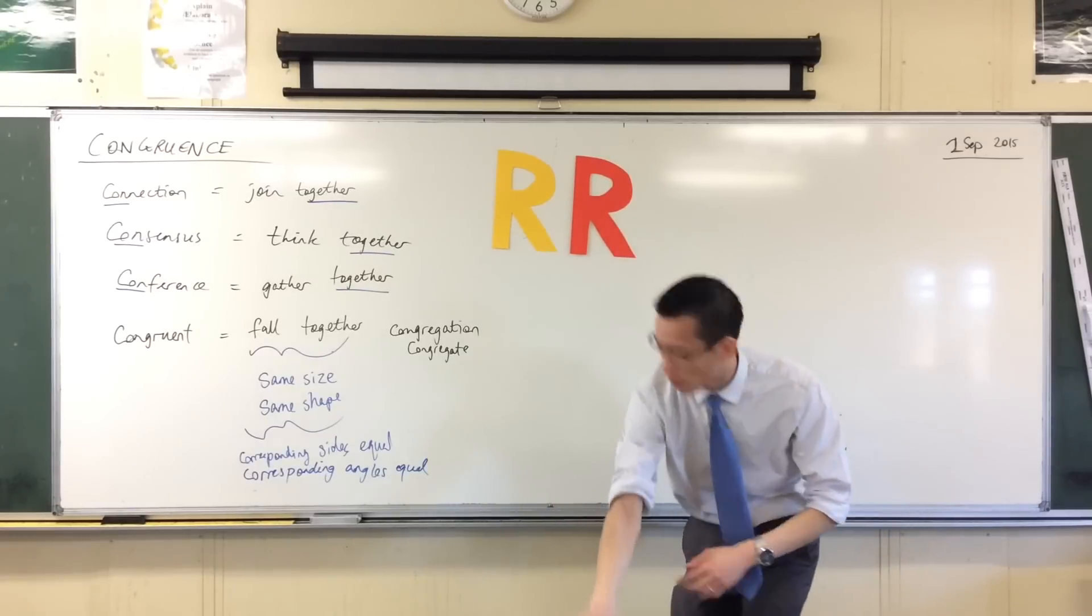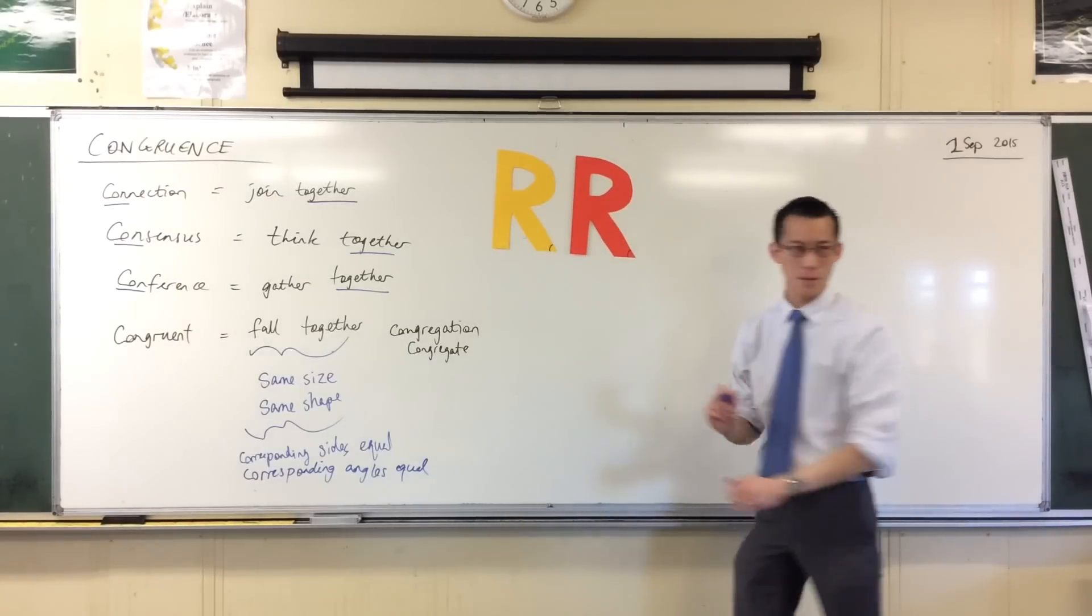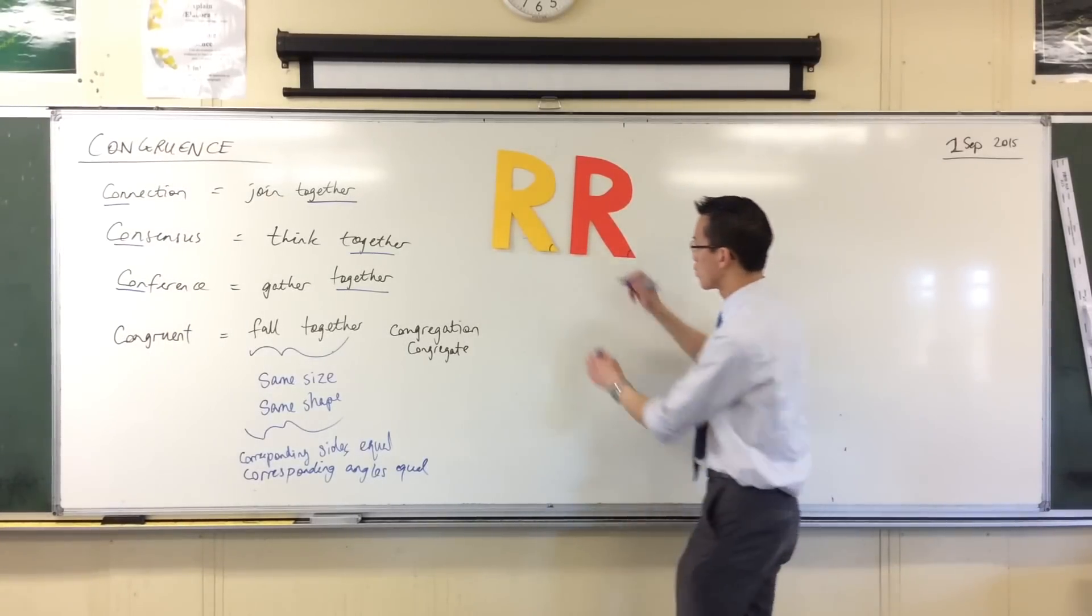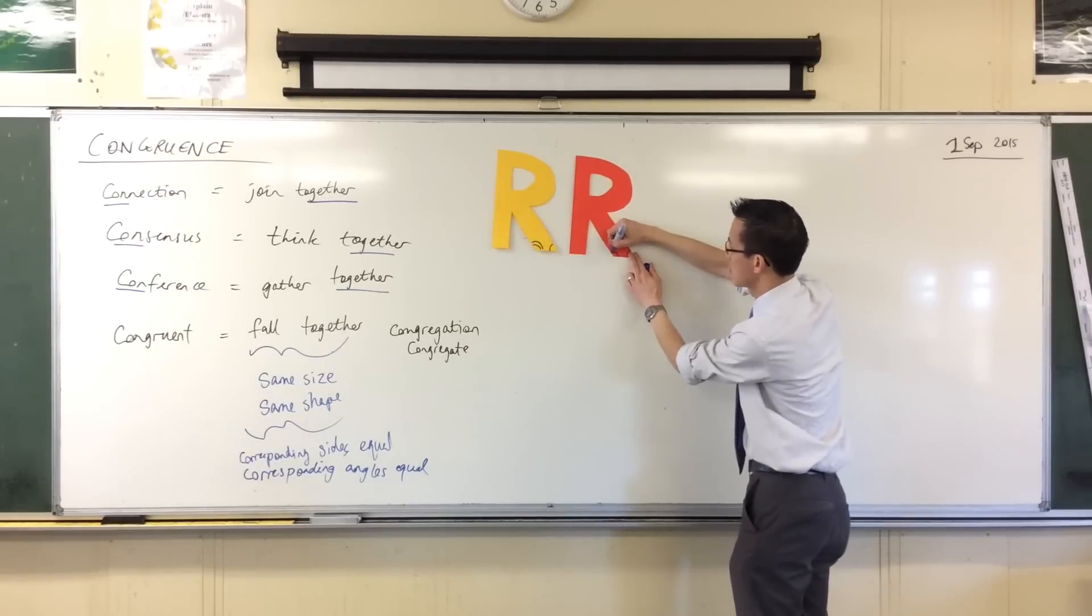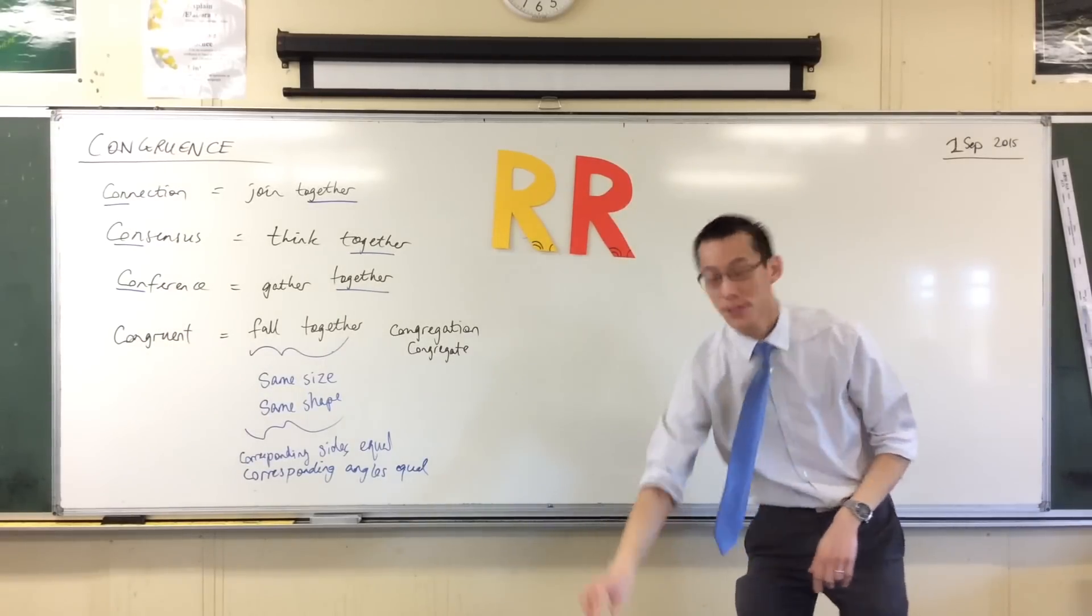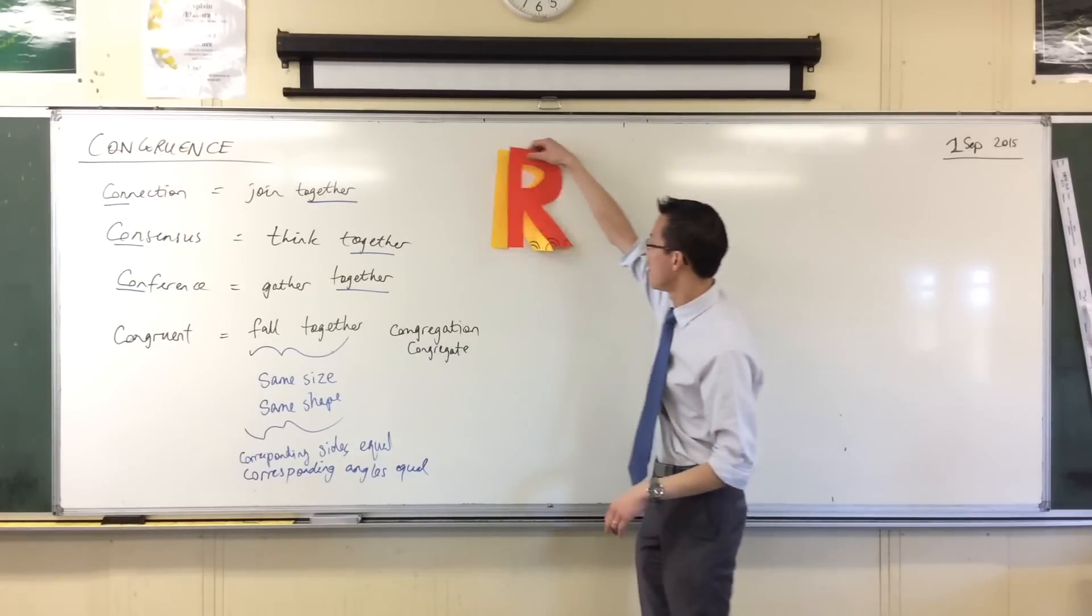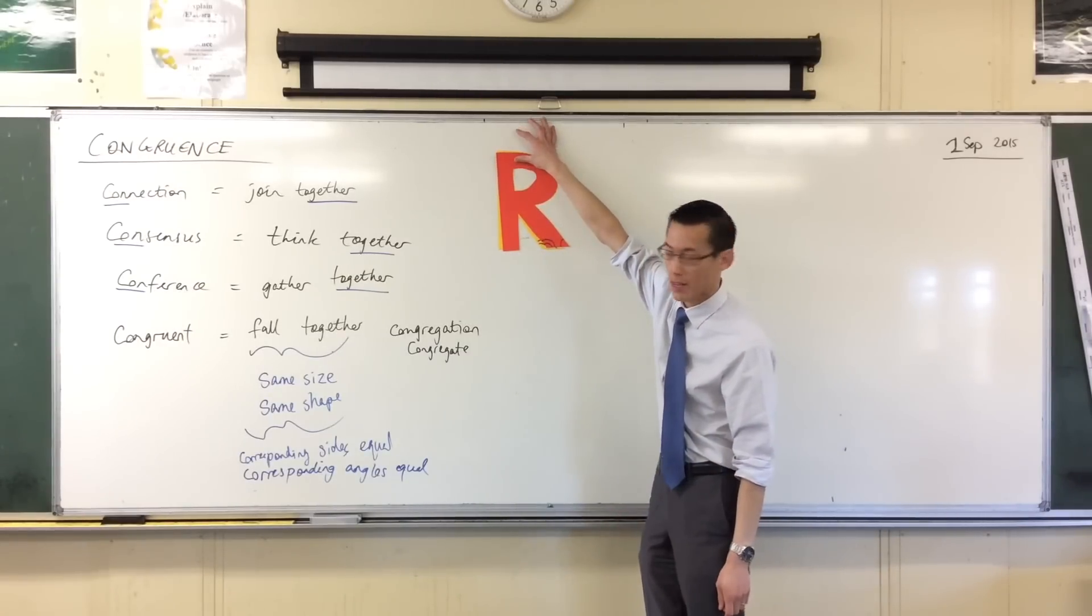It's no problem if this angle over here is different to this angle because those two don't correspond, do you see that. But I want this angle here to be the same as that one, I would want this angle to be the same as this one because they correspond to each other. When I put them so they fall together those sit one on top of each other, that's what we mean by correspondence.